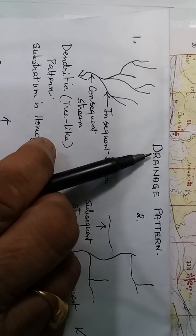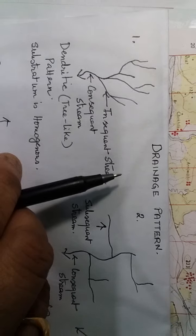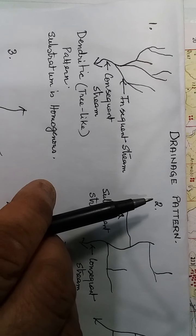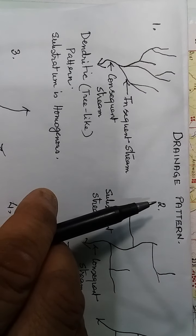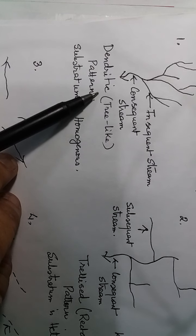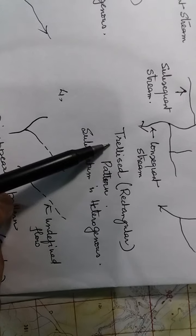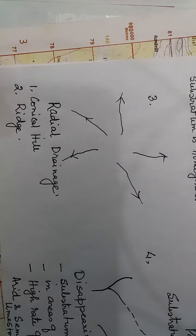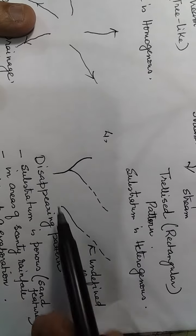A drainage pattern is formed by a river with its tributaries, and in the topo sheet we have to identify the drainage pattern — it is a very important question. There are four types of drainage pattern: the first is dendritic, also called a tree-like pattern; the second is trellised or rectangular; the third is radial drainage; and the fourth is called the disappearing pattern.